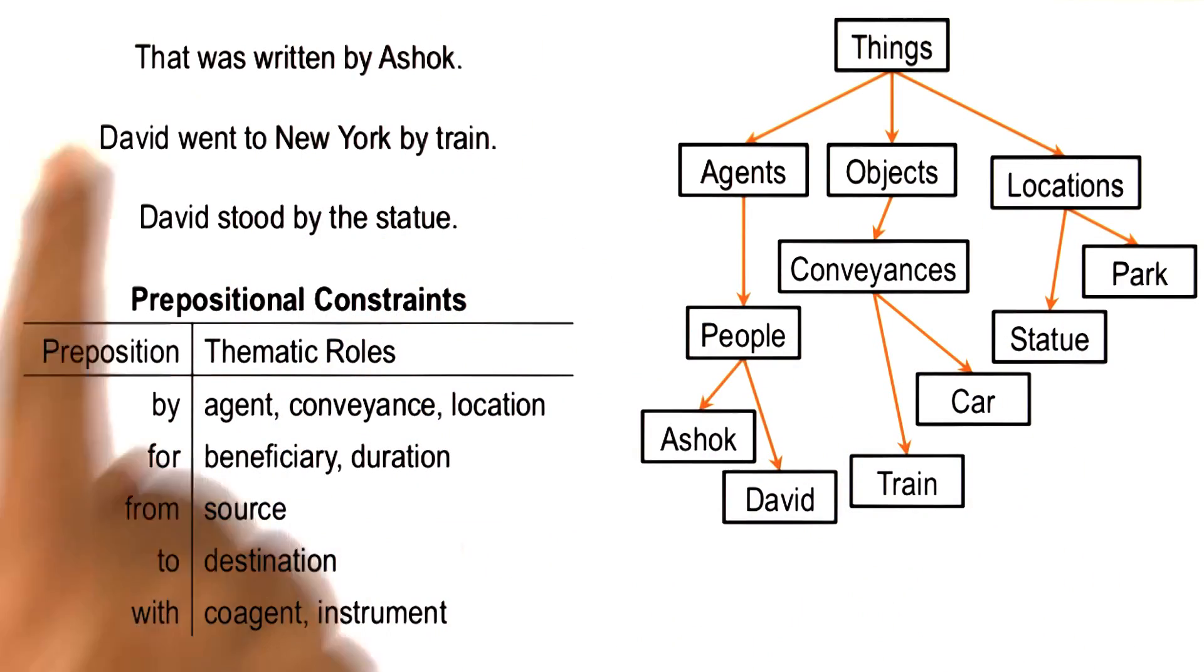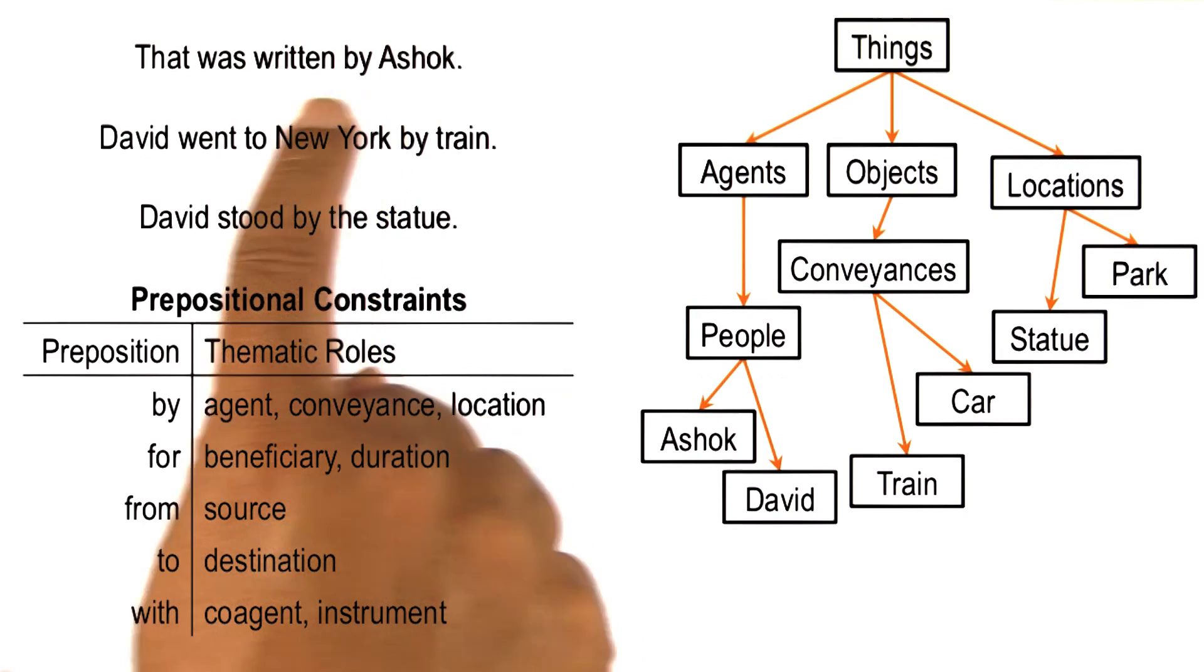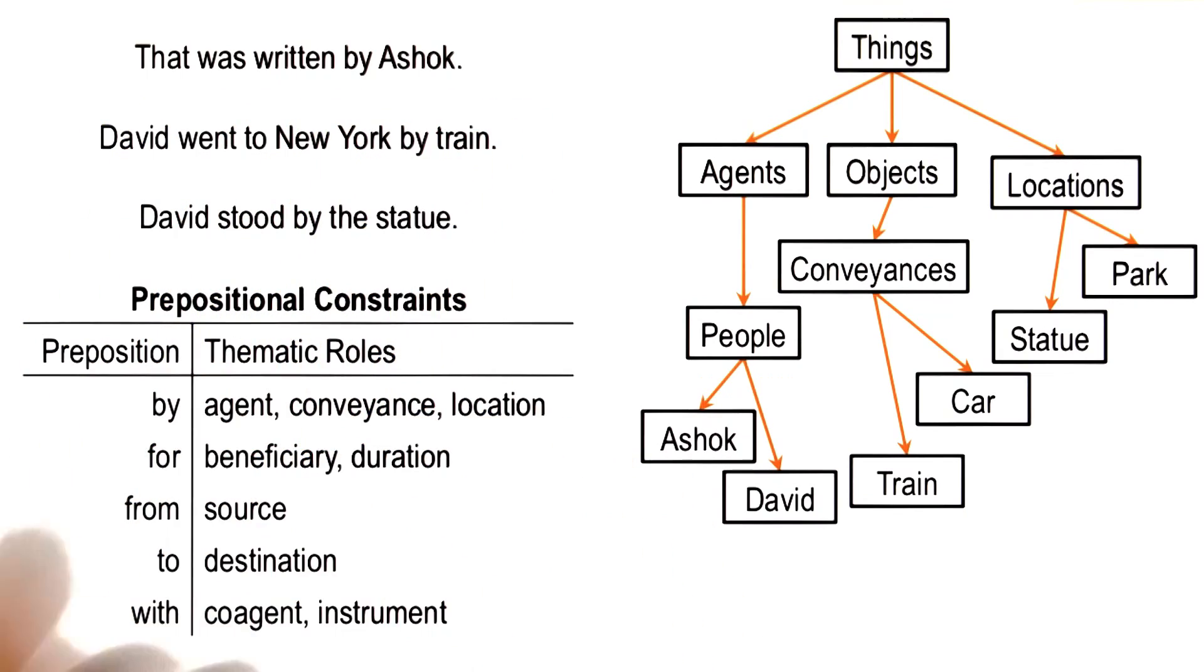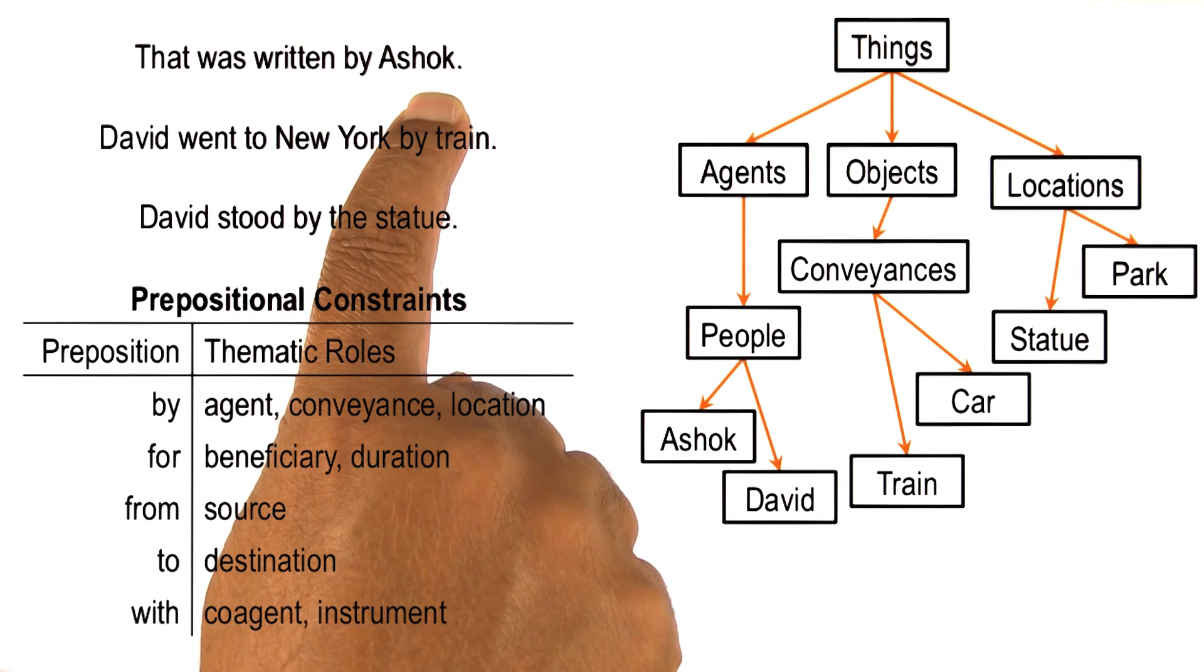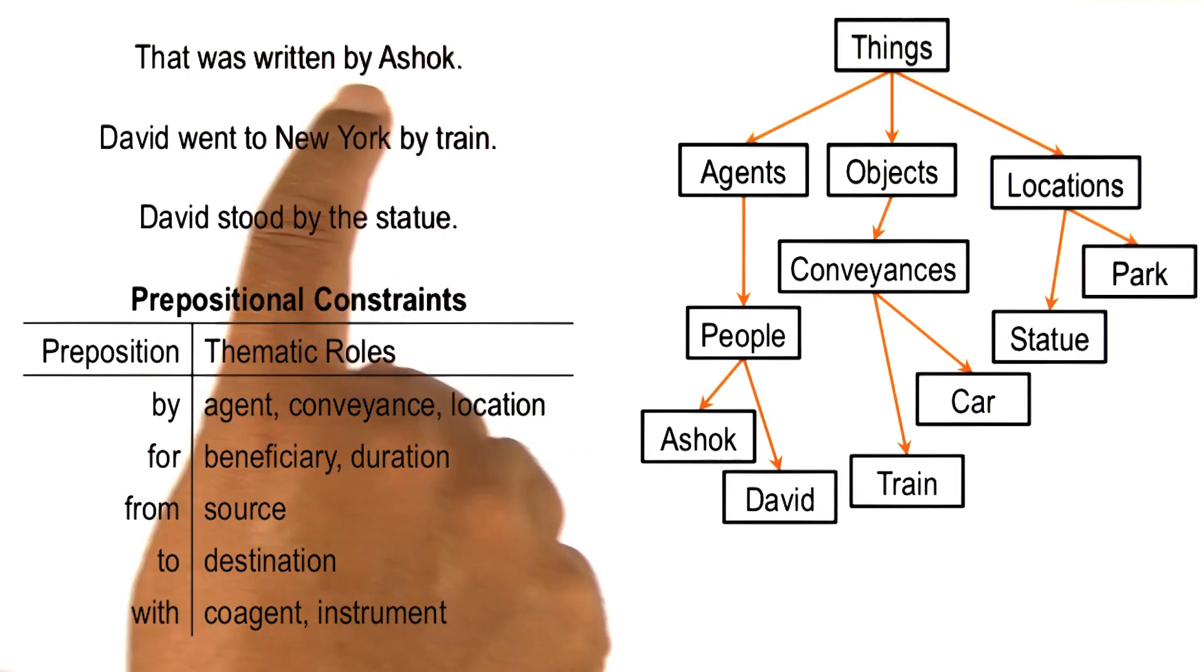Note that this analysis applies to different propositions, not just to by. Supposing this first sentence was, that was written with Ashok. In which case, this proposition with will point to Ashok either being a co-agent or being an instrument. So again, we now know that Ashok is a co-agent in this sentence, which contained the proposition with.